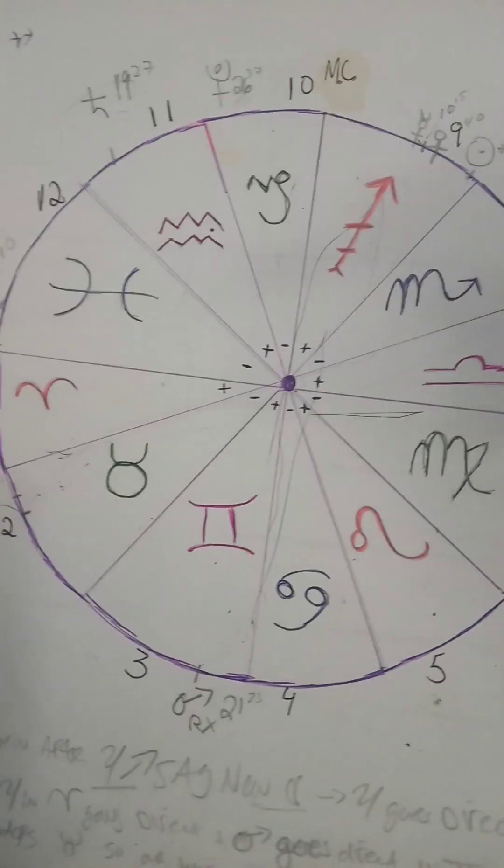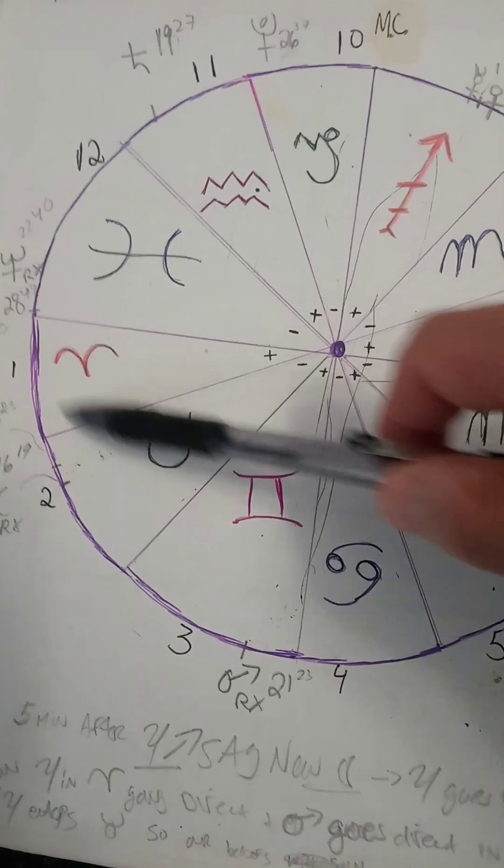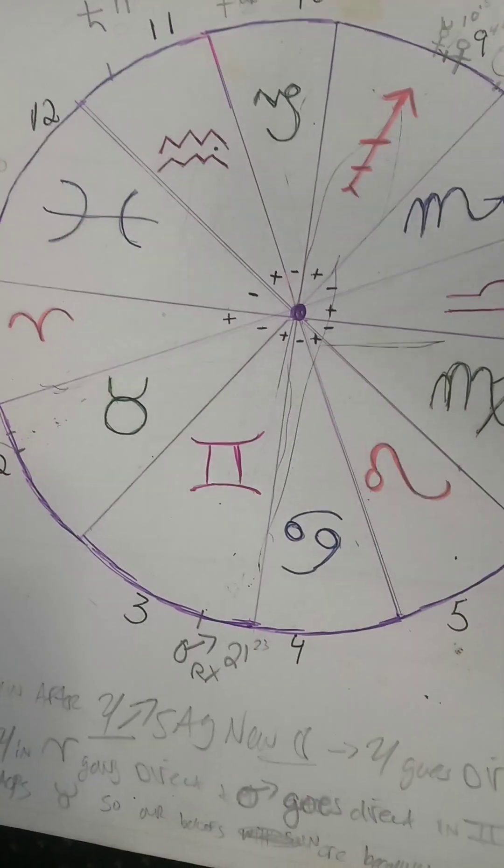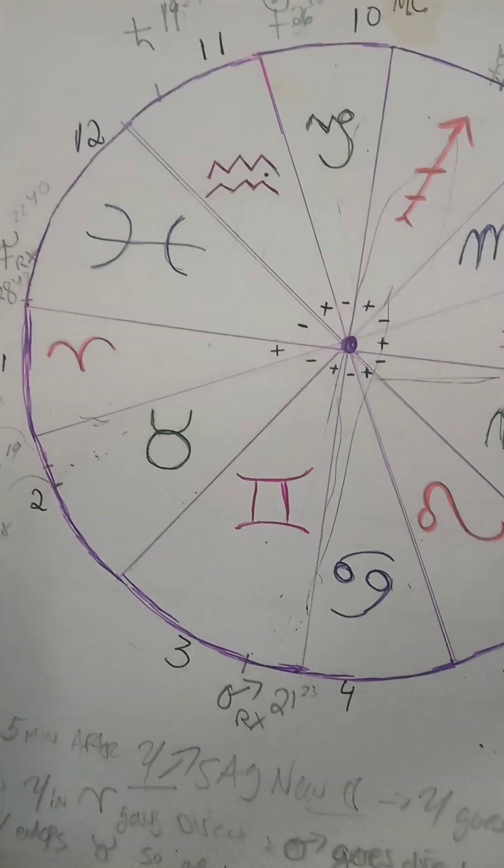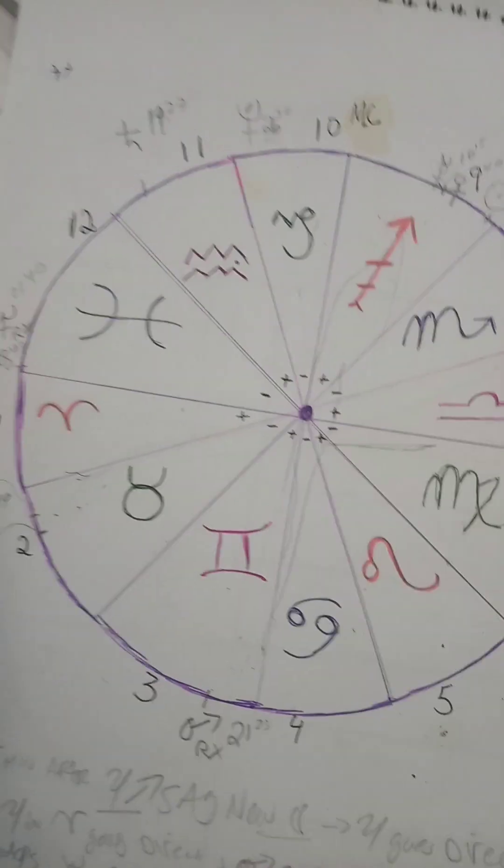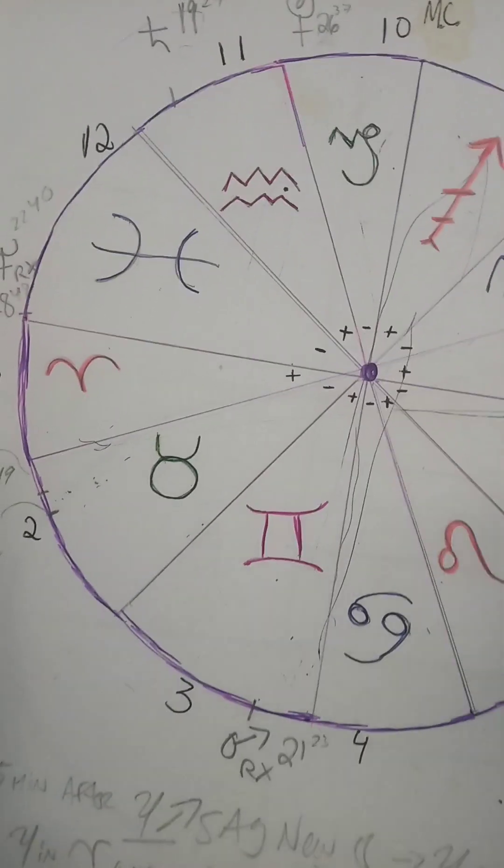Let's say someone has Pluto or Black Moon Lilith on their ascendant or by their first house. This is going to be very harsh circumstances coming into this world. The birth might've been difficult - you might've lost your mother at birth, she might've bled out, or there could have been many complications.